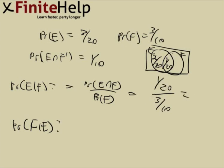Let's change this to 6 twentieth — we can cancel the 20, and this comes out to 1 sixth.